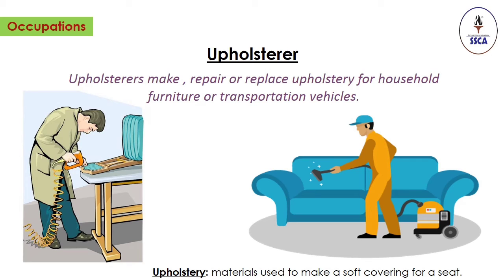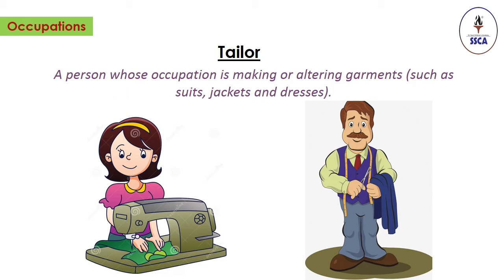Upholsterer. Upholsterers are people who make, repair or replace upholstery for household furniture or transportation vehicles. Upholstery is a material used to make a soft covering for a seat. Tailor. A tailor is a person who makes or alters garments such as suits, jackets and dresses.